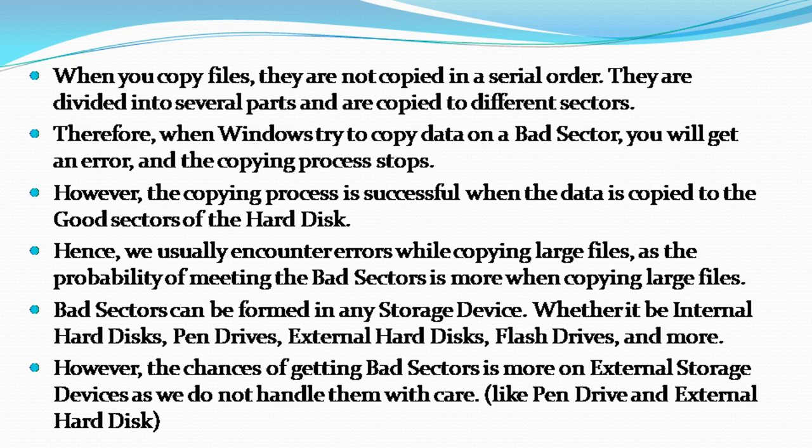When you copy files, they are not copied in a serial order — they are divided into several parts and copied to different sectors. Therefore, when Windows tries to copy data on a bad sector, you will get an error and the copying process stops. However, the copying process is successful when the data is copied to the good sectors of the hard disk. Hence, we usually encounter errors while copying large files, as the probability of meeting the bad sectors is more when copying large files.